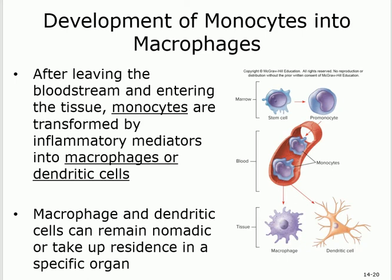How do monocytes become macrophages? Monocytes already have phagocytic activity. But when they leave the bloodstream and go to the tissues, inflammatory mediators are going to change them into macrophage or dendritic cells, depending on the location.